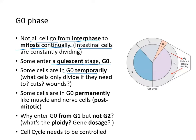Some cells are in G0 temporarily — cells that only need to divide when necessary, like skin cells. If you get a cut, your skin cells are constantly dividing. Sometimes the growth pattern needs to change, because if you get a cut, you need a higher growth rate; otherwise the wound is not going to heal.